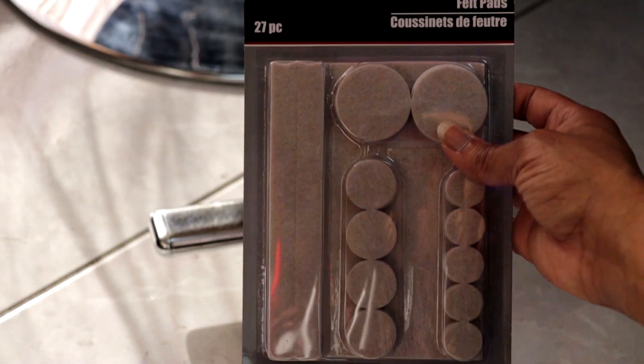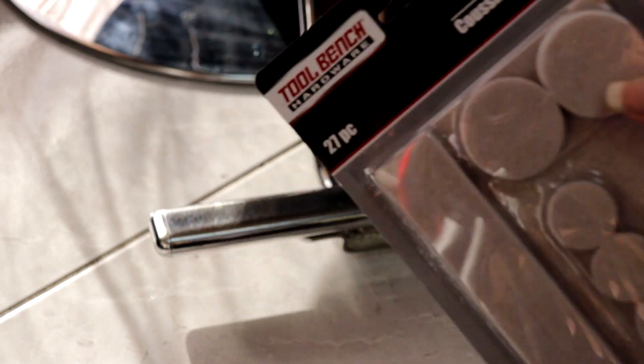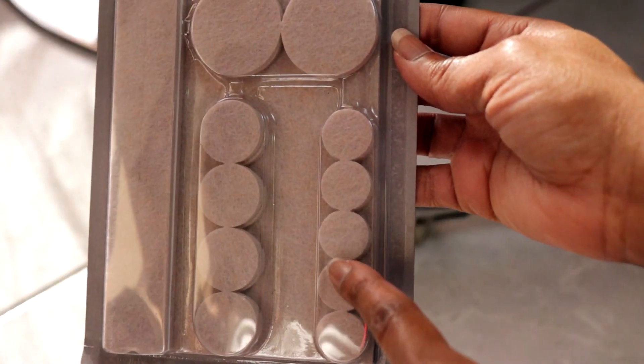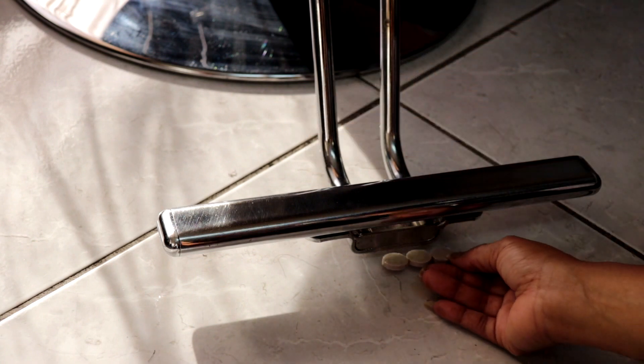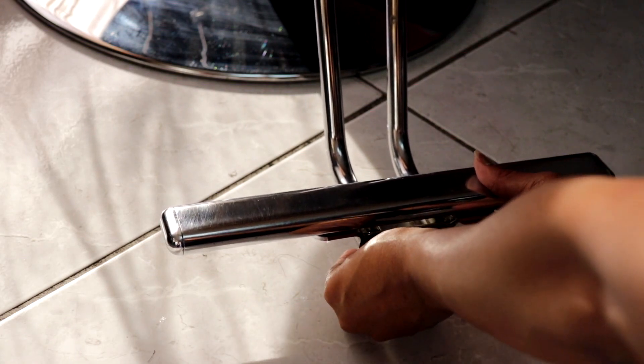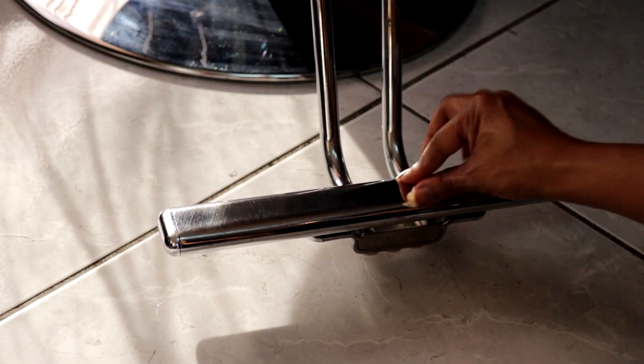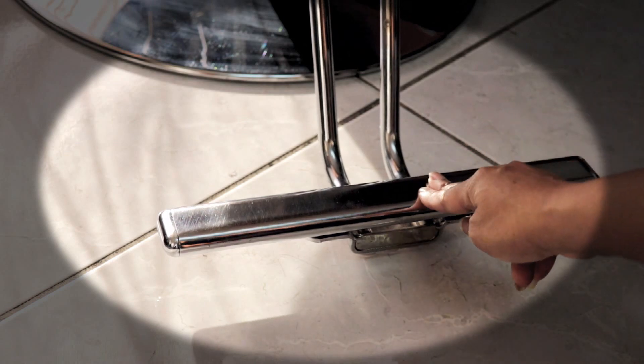You will use these felt pads that I got from Dollar Tree. We're going to use the small circular ones. Remove the sticker, then place it right underneath and stick it on. No more sound.